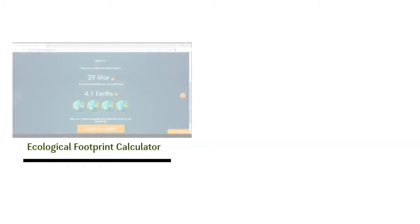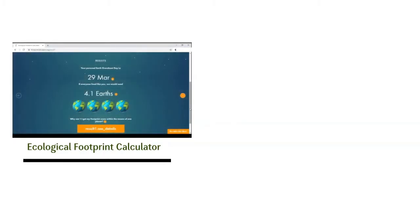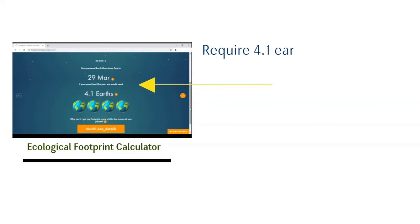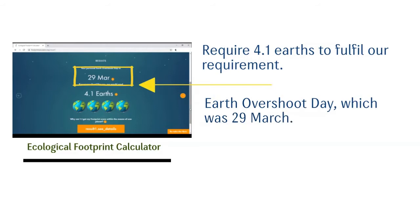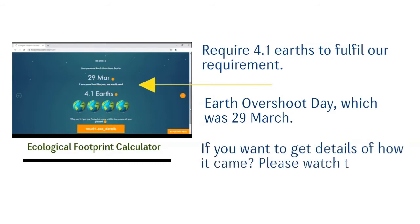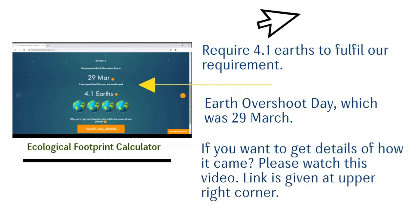Let us understand it simply. In our Ecological Footprint Calculator video, we had seen that according to our lifestyle selection choices, we required 4.1 Earths to fulfill our requirement. There was another thing in that analysis that we hadn't discussed at the time, and it was Earth Overshoot Day, which at the time was 29th March. If you want to get details of how it came, please watch that video — the link is given at the upper right corner.